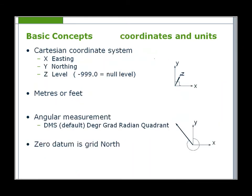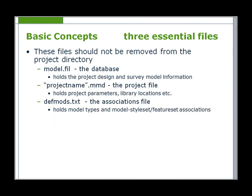MX uses a Cartesian coordinate system and is unitless, but units have to be set to metres or feet for reports and quantities. Angular measurement is set by default to degrees, minutes and seconds, but can be set to suit local standards. Zero datum is grid north.